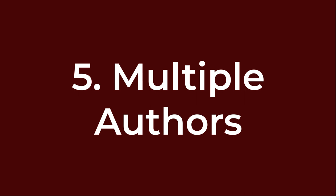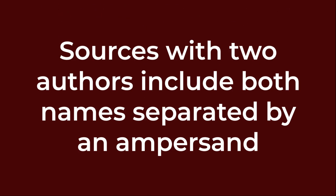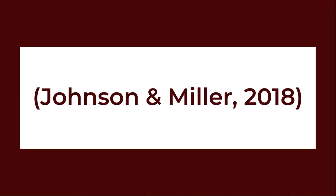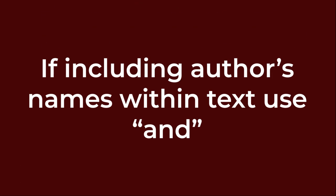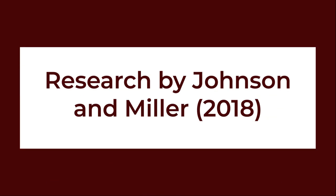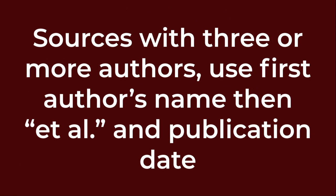Number five: multiple authors. For sources with two authors, include both names separated by an ampersand. For example: (Johnson & Miller, 2018). If you're including the author's name within the text, make sure to fully write out the word "and." For example: Research by Johnson and Miller (2018). For sources with three or more authors, use the first author's name followed by et al. and the publication date. In "et al.," "et" should not be followed by a period — only "al." should be followed by a period. For example: (Brown et al., 2018).